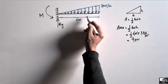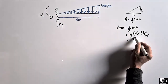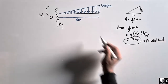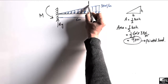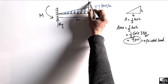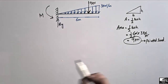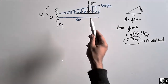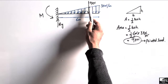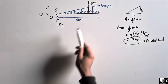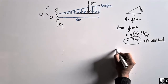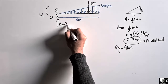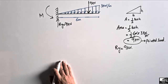This uniformly varying load is converted into a point load of 9 kN acting at a specific position on the beam. Since this is the total load and there is only one fixed support, the reaction Ry must resist the entire load. Therefore, Ry is equal to 9 kN.